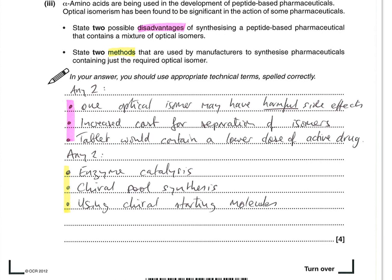The second part asks for two methods used by manufacturers to make pharmaceuticals containing just the required isomer — sometimes called an enantiopure substance, containing only one enantiomer. Any two of these: enzyme catalysis — enzymes are natural molecules that occur as only one optical isomer, ensuring chirality is replicated in the target pharmaceutical. Chiral pool synthesis — that's where you have a stock of already chiral molecules, which ties in with enzyme catalysis as well.